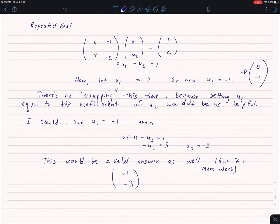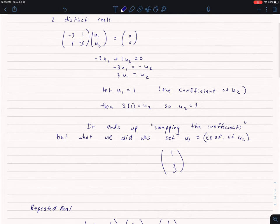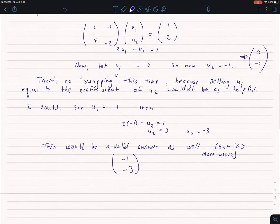Well it seems like if I talked about swapping things before, why on earth am I not swapping things now? Well because if I go back here, what I've done is, the reason why I could swap, is I'm setting u1 equal to the coefficient of u2. In this case, I'm letting u1 equal 0. It's not actually the coefficient of u2. So there is no swapping.